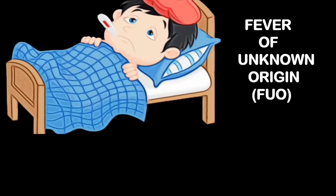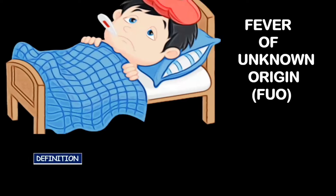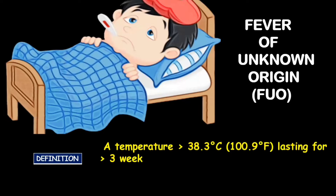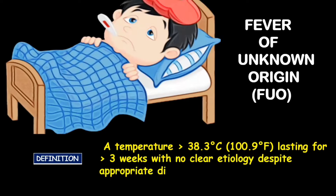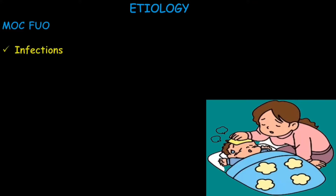Today we will talk about fever of unknown origin. First of all, how do we define it? When temperature is greater than 38.3°C or 100.9°F, which lasts for more than three weeks with no clear etiology despite appropriate diagnostics, it is known as fever of unknown origin. The most frequent etiologies are infections, malignancies, and inflammatory conditions.